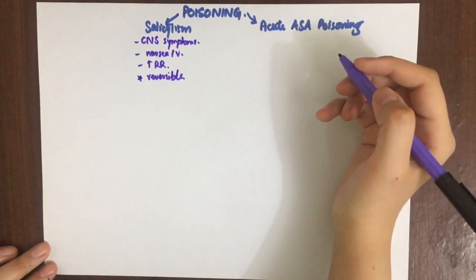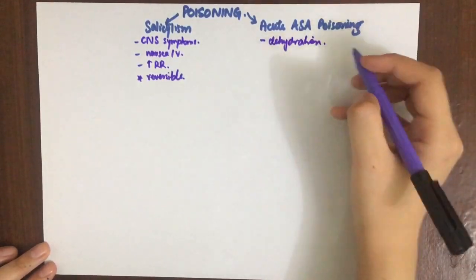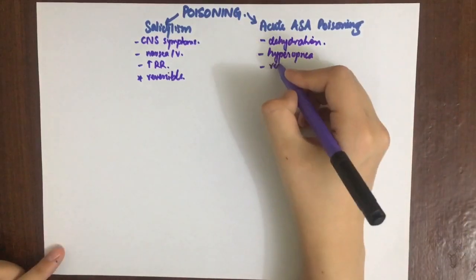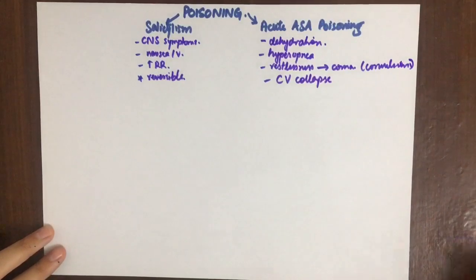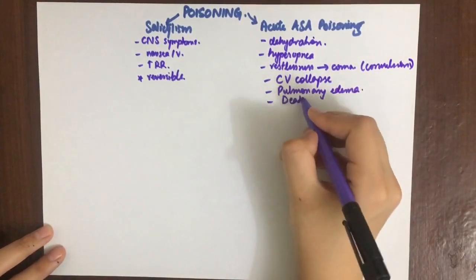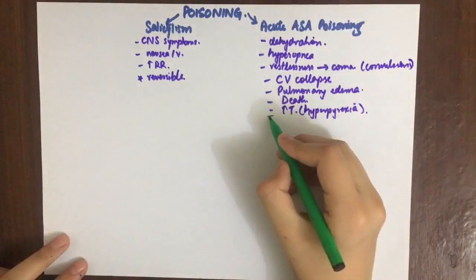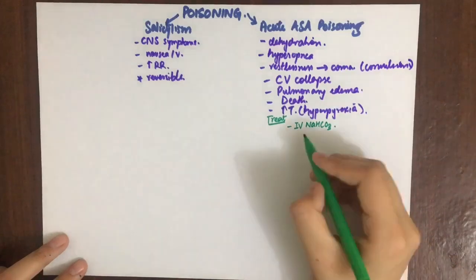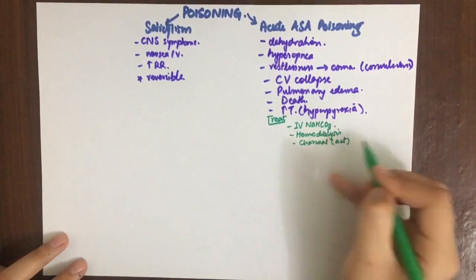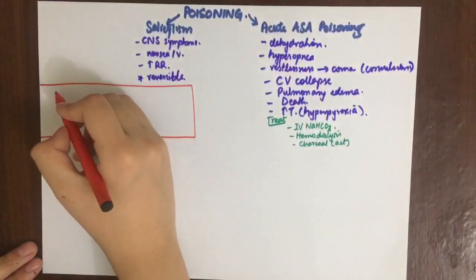Acute salicylate poisoning is most common in children and presents with vomiting, dehydration (from hyperventilation and vomiting), fever, hyperpnea (due to uncoupling of oxidative phosphorylation), restlessness, coma, convulsions, cardiovascular collapse, pulmonary edema, hyperpyrexia, and death. Treatment includes hospitalization, gastric lavage, activated charcoal (physical antagonist), electrolyte and fluid balance restoration, IV sodium bicarbonate to alkalinize urine and increase aspirin excretion, hemodialysis if necessary, and vitamin K with blood transfusions in cases of bleeding.